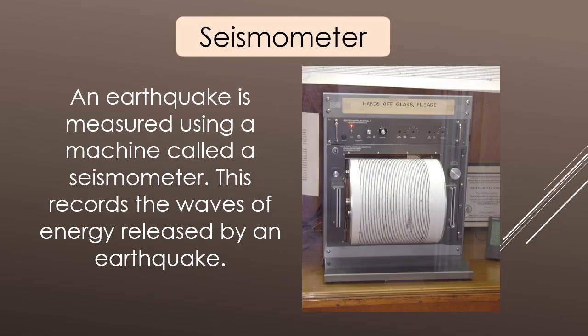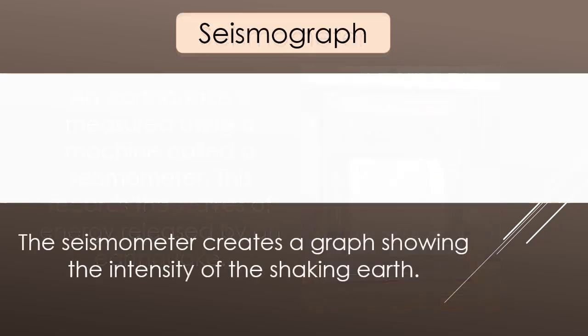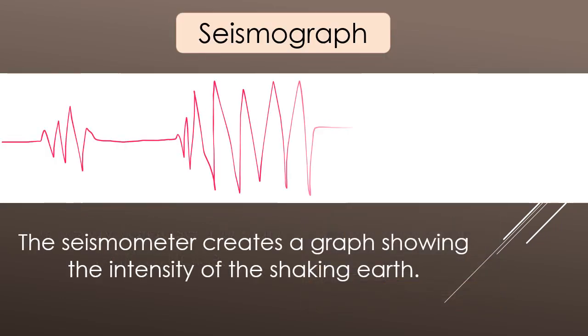An earthquake is measured using a machine called a seismometer. This records the waves of energy released by an earthquake. The seismometer creates a graph showing the intensity of the shaking Earth.